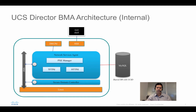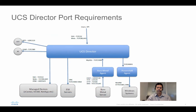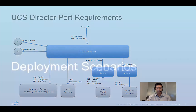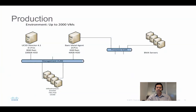I'll cover what to do if it doesn't work in the bare metal agent session. This is what the bare metal agent looks like — its only job is to deploy bare metal servers. You need different ports open, and there is clear documentation on the Cisco website. The UCSD must be able to talk to the components it's managing, so you need to know which ports to open.